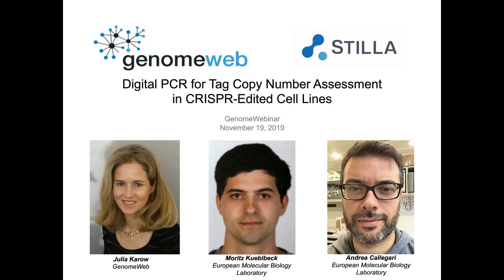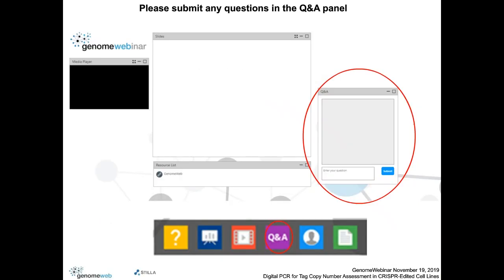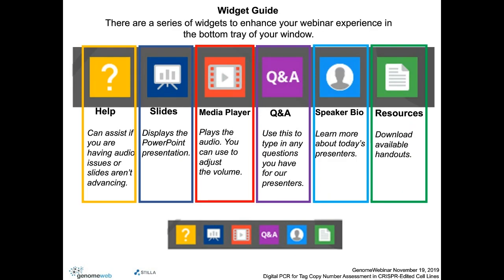Good morning or good afternoon everyone and welcome to Genome Webinars. I'm Julia Caro, Managing Editor at GenomeWeb and I'll be your moderator today. The title of today's webinar is Digital PCR for Tag Copy Number Assessment in CRISPR-edited cell lines. This webinar is sponsored by Stiller Technologies. Our speakers today are Moritz Kübelbeck and Andrea Caligari, both research technicians in Jan Ellenberg's group at the European Molecular Biology Laboratory in Heidelberg, Germany. You may type in a question at any time through the Q&A panel, and we will ask our speakers your questions after the presentations have concluded.